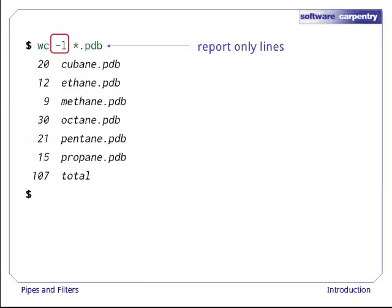If we run wc -l instead, our output shows only the number of lines per file. We can use -w to get only the number of words, or -c to get only the number of characters.